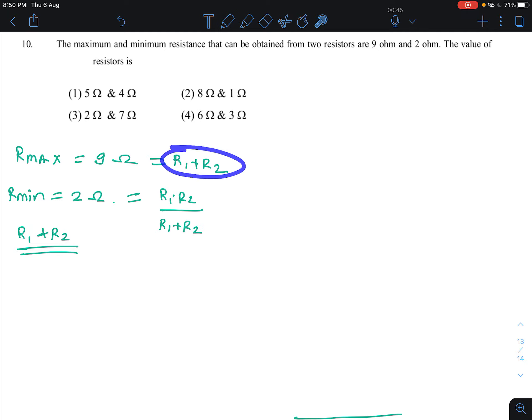So if you connect two resistances in series, then the maximum resistance will be equal, and the two resistances in parallel combination will be the value of the minimum.